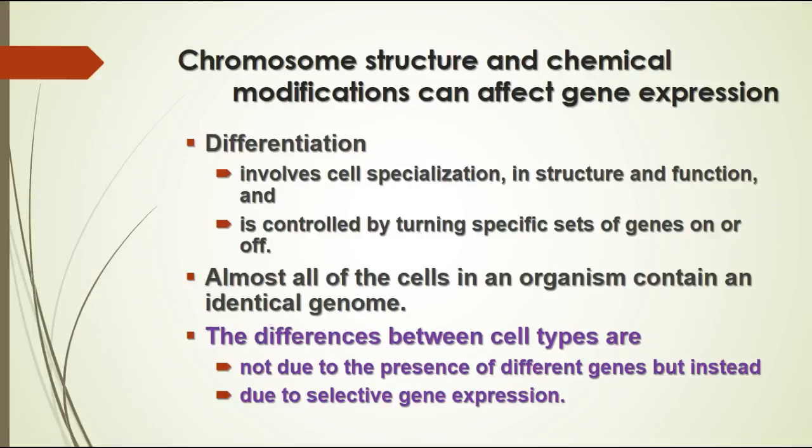An important concept in gene control is differentiation. In multicellular organisms like humans, all cells have the same DNA but they don't all look alike or do the same thing. Differentiation during embryonic development is controlled by turning specific genes on and off at specific times. The differences in cell types in your body are not due to different genes but due to selective expression of the genes that are present.